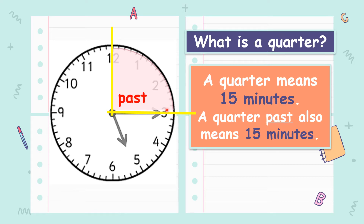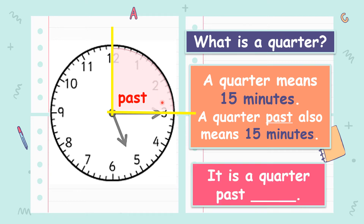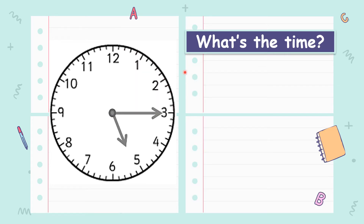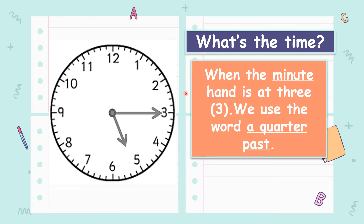When we see a quarter past, it means it's 15 minutes after a certain time. We always say it is a quarter past. For example, what's the time? When we see the minute hand — this is the minute hand, the long needle — it is at 3. We use the word a quarter past.